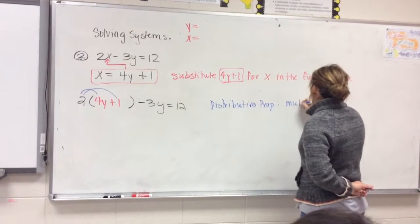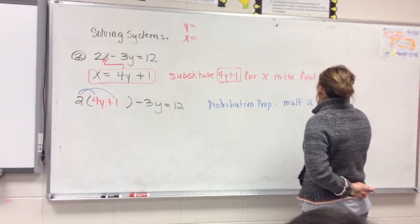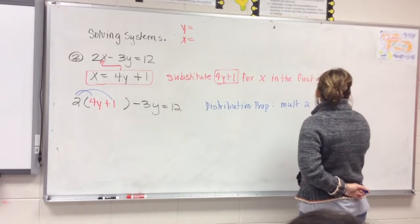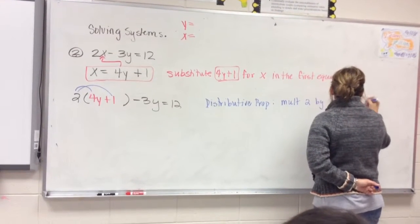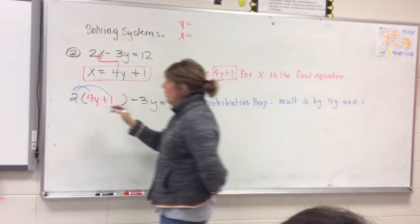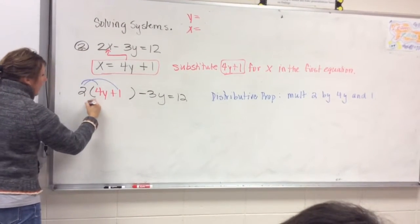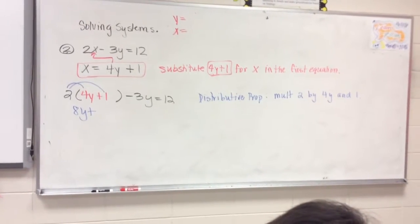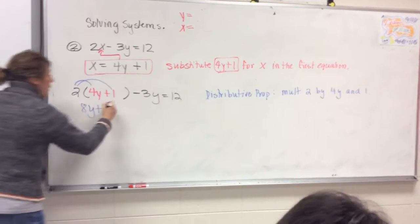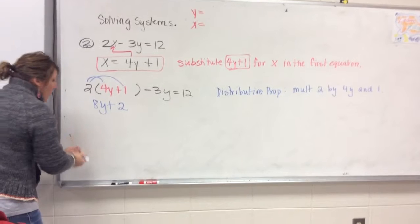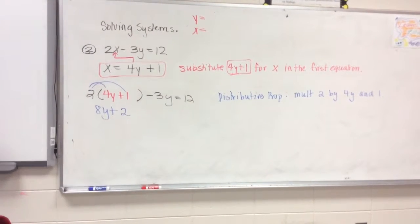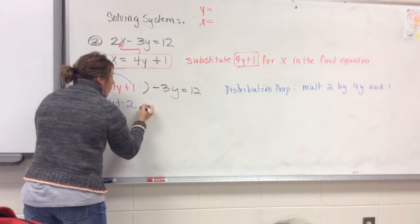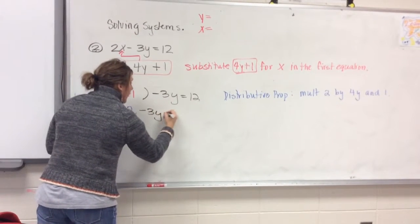That's where you're going to multiply 2 by 4y and 1. So when you multiply 2 times 4y, you get 8y plus 2 times 1 gives you 2. So when you distribute it, you should get 8y plus 2. And now I'm just going to bring down the rest. So negative 3y equals 12.